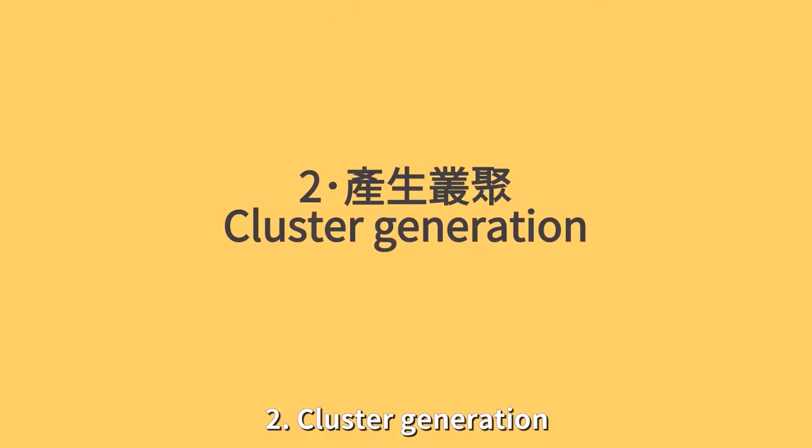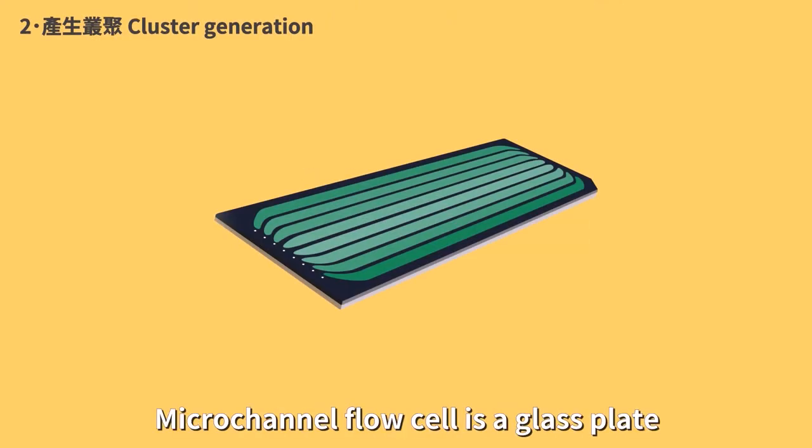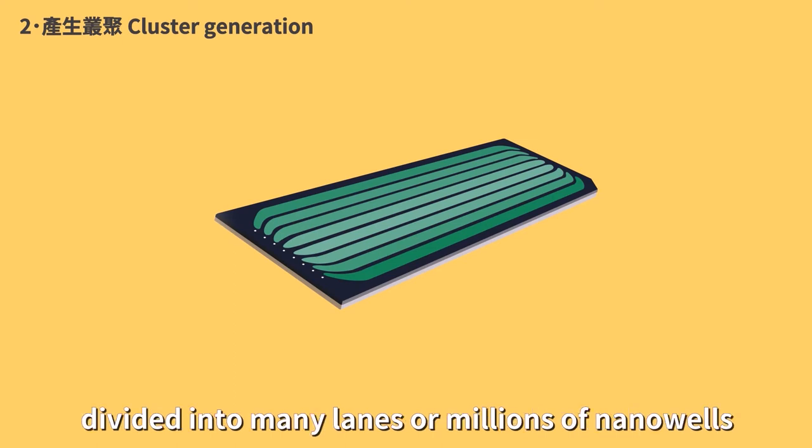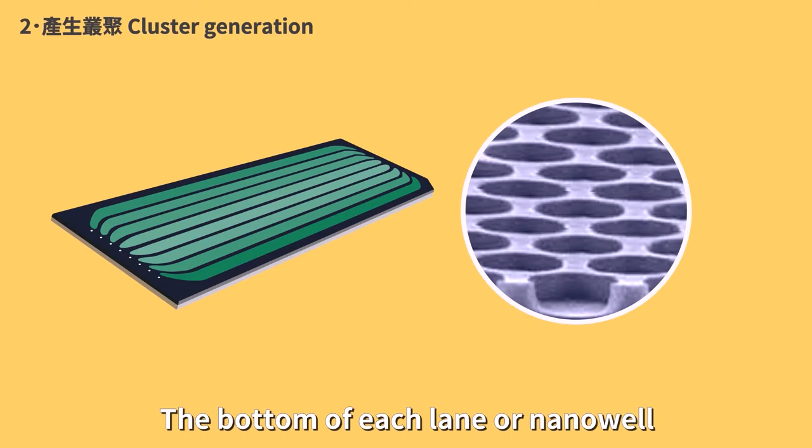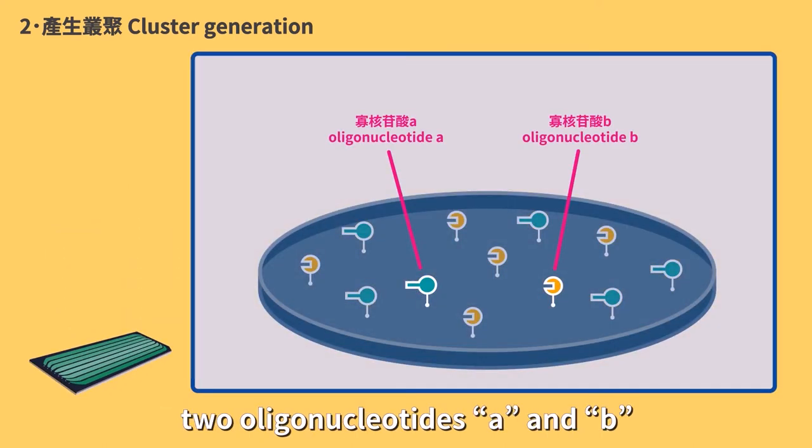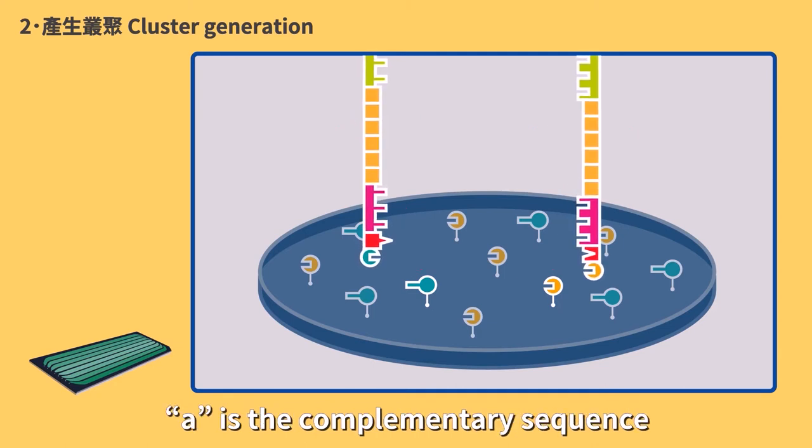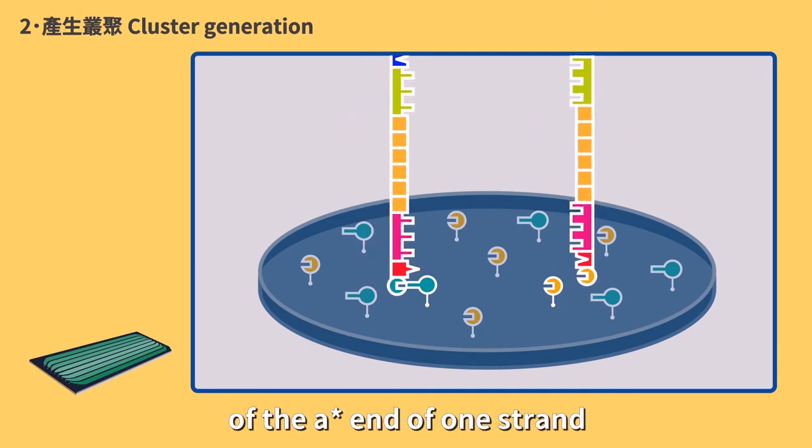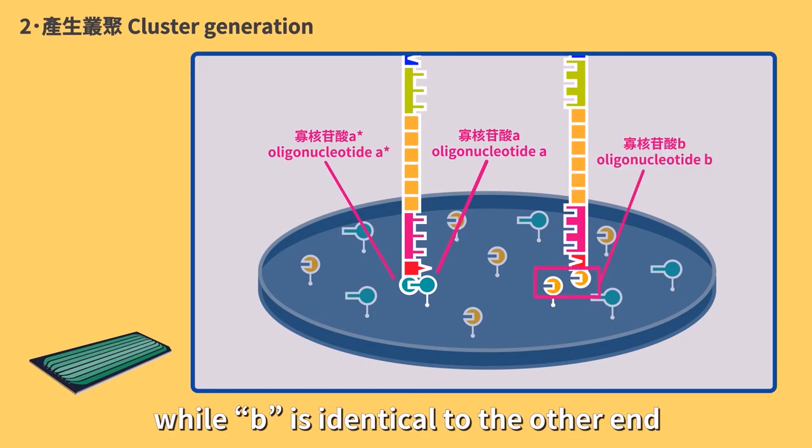Step 2: Cluster generation. Microchannel flow cell is a glass plate divided into many lanes or millions of nano-wells. The bottom of each lane or nano-well is evenly coated with two oligonucleotides, A and B. A is the complementary sequence of the A star end of one strand, while B is identical to the other end.